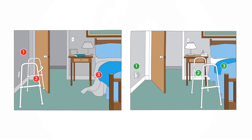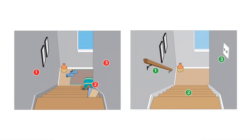Sometimes elderly individuals do not remember to turn on the lights or feel they don't need them. Removing the need to turn on lights is a great way to make sure rooms, stairs, and hallways are always bright enough. Installing lighting with remotes for older adults who have mobility issues will ensure they don't have to reach light switches. Inadequate lighting will affect individuals with diabetic retinopathy and is usually associated with potential falls.